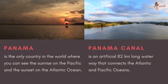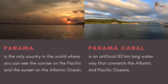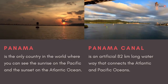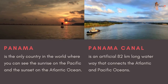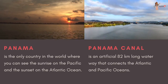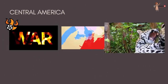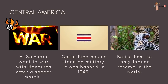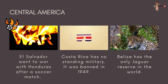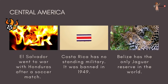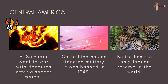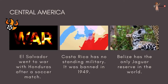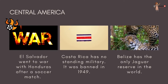Panama is the only country in the world where you can see the sunrise on the Pacific and the sunset on the Atlantic Ocean. The Panama Canal is an artificial 82-kilometer-long waterway that connects the Atlantic and Pacific Oceans. El Salvador went to war with Honduras after a soccer match. Costa Rica has no standing military — it was banned in 1949. Belize has the only jaguar reserve in the world.